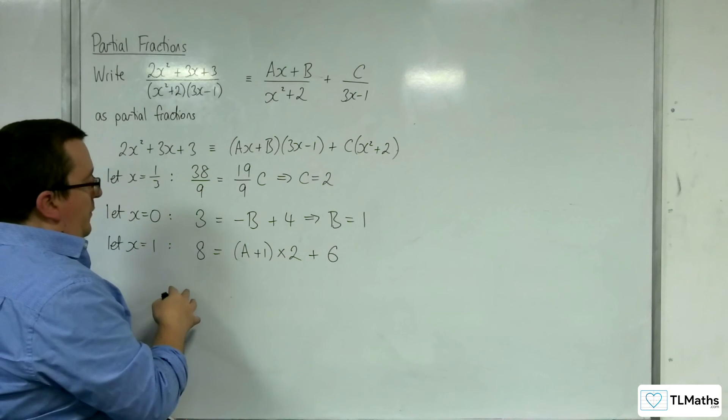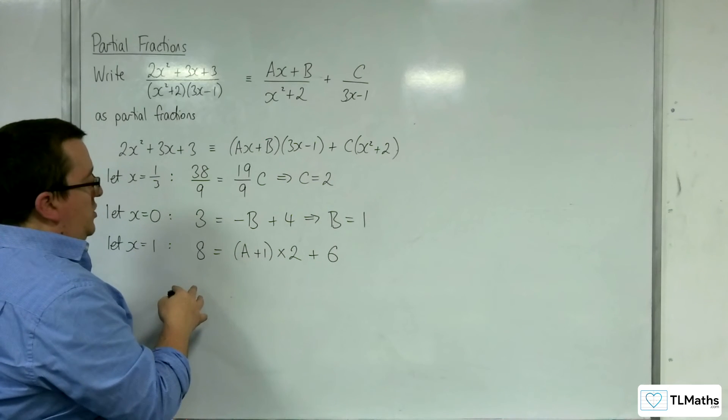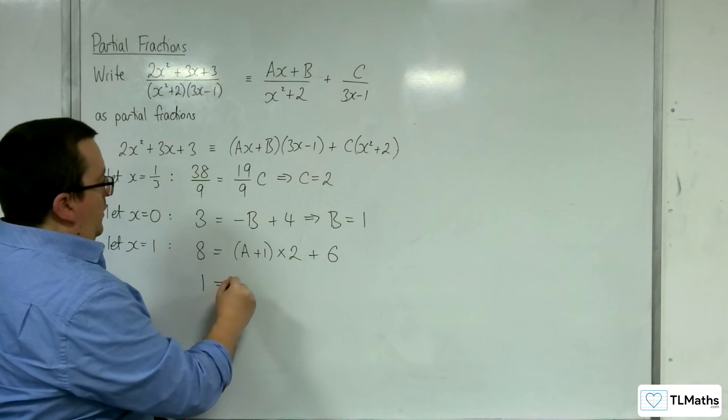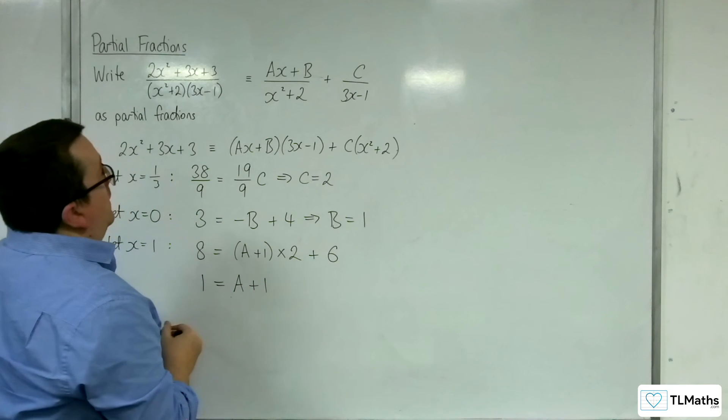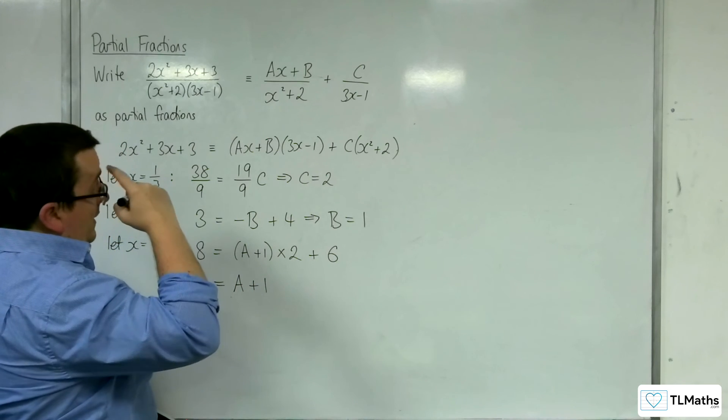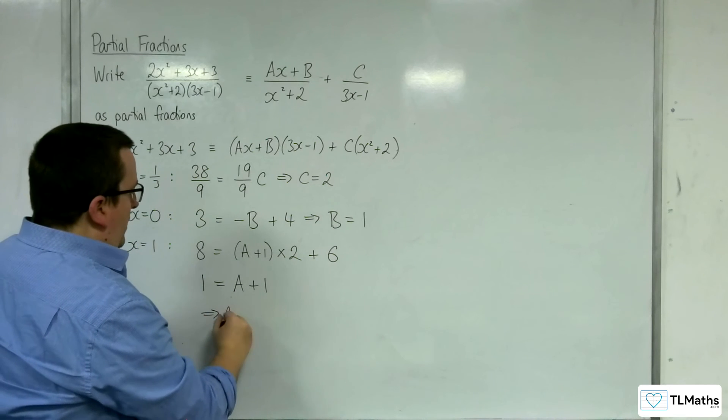So if I take 6 from both sides, divide through by 2, we're going to get 1 is equal to a plus 1. And so that means, in this case, that a will be equal to 0.